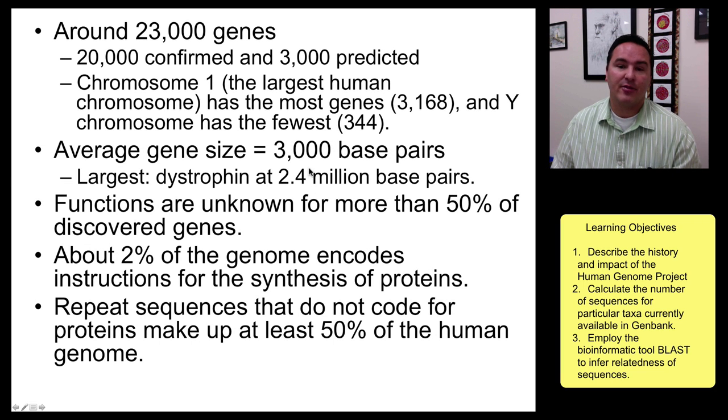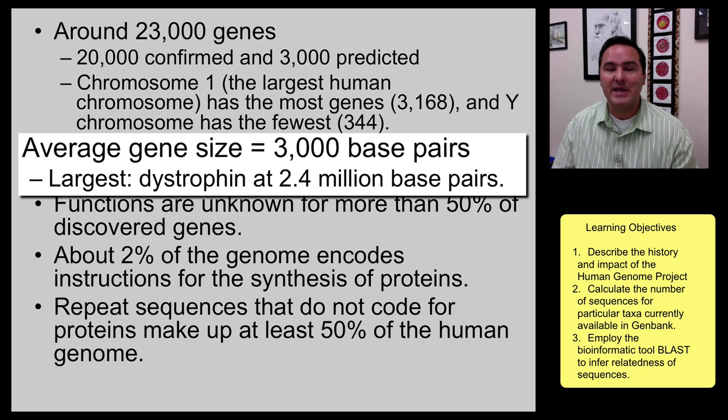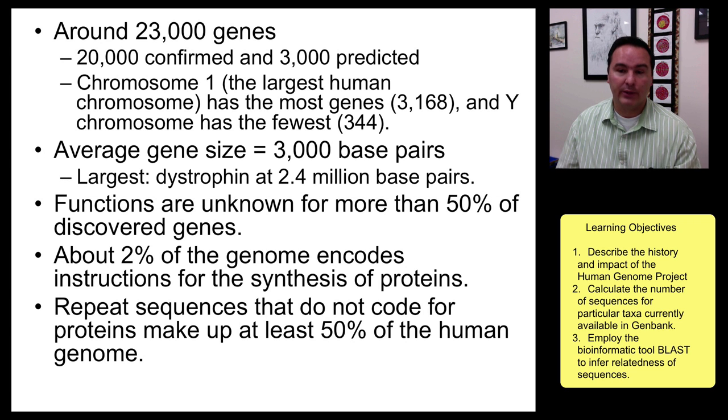The average size of a gene is about 3,000 base pairs, and that's, though, it varies. It can be much smaller or much larger. For example, the largest human gene is dystrophin, which is a 2.4 million base pair long gene, really, really long.